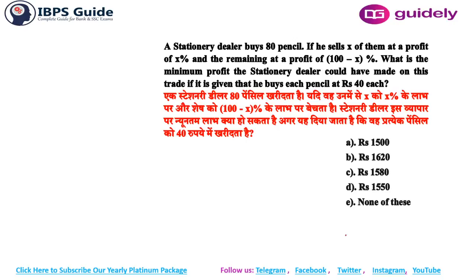First, break out the language of the question. Let me read it first and I'll explain everything related to this question — we will definitely learn a new concept from it. So let's start reading: a stationary dealer buys 80 pencils. If he sells x of them at a profit of x percent, and the remaining at a profit of some other percent — what is the minimum profit the dealer could have made on this trade, given that he buys each pencil at rupees 40?